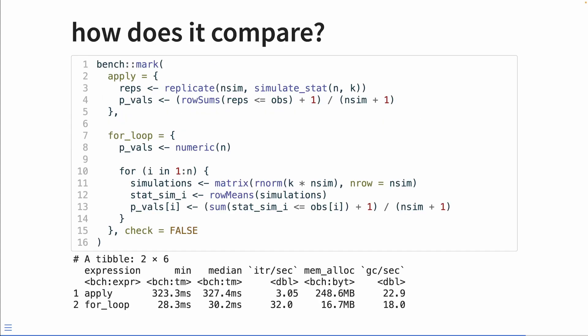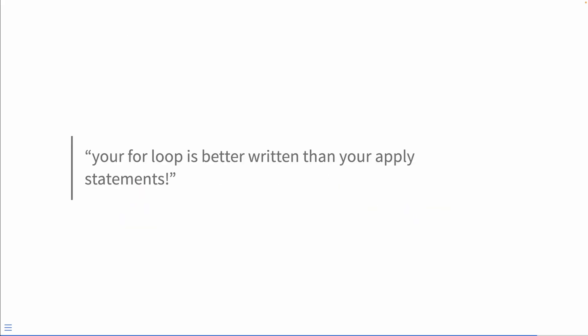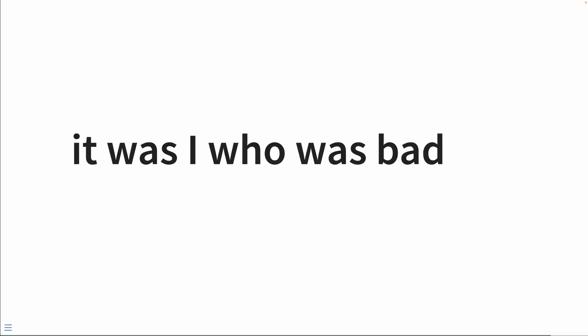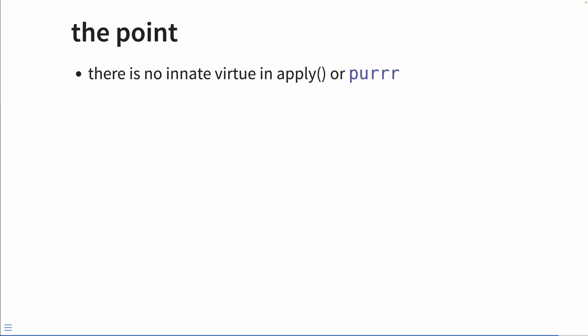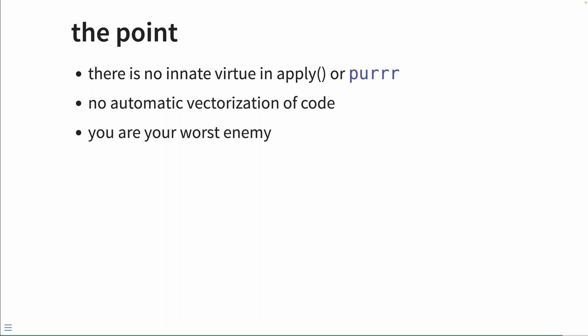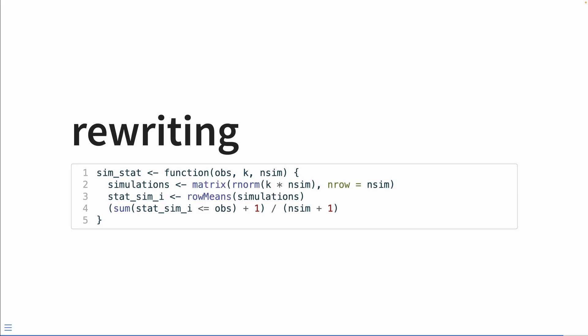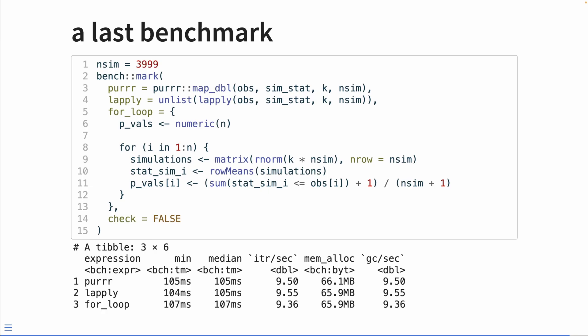So how does this compare? The for loop approach is about 10 times faster — crazy. You might say: that's not fair, your for loop is better written than your apply statements. And that's the point: it was I who was bad. I wrote the bad code. It wasn't the apply statements or the for loop that was bad — it was me. We can rewrite this into a single function and iterate over it. In the final benchmark comparing purrr, lapply, and a for loop, the for loop is slower by just two milliseconds for 3,999 simulations. They're identical to me.